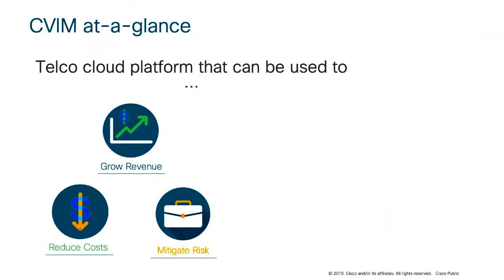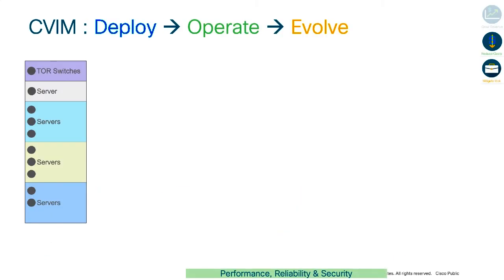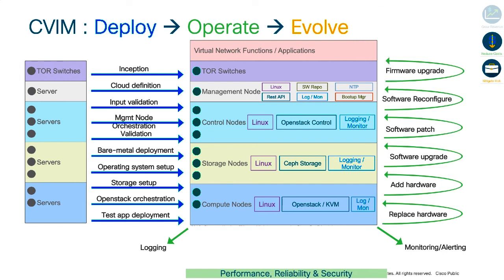Thank you, Abdullah. Let's take a look at Cisco VIM — Cisco's telco cloud platform, OpenStack-based. This platform enables telco operators to maximize revenue while keeping costs down and minimizing risk. For something as complex as a telco cloud platform, the only way to achieve this properly is through extensive automation, and that's exactly what Cisco VIM delivers. Building and operating a telco cloud — going from a bunch of servers to a fully running cloud — involves a whole range of things that need to happen.